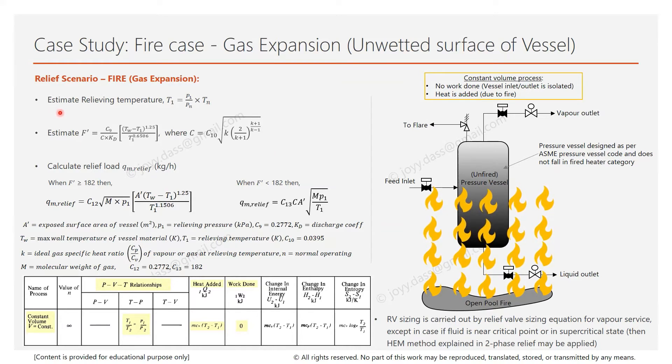Next we calculate the relieving temperature. Now since the vessel inlet and outlet is isolated and heat is added due to fire, it's a constant volume process and ideal gas relationship for a constant volume can be applied to calculate the relieving temperature using this formula, where T1 is the relieving temperature, P1 is the relieving pressure, and Pn and Tn are normal operating pressure and temperature.